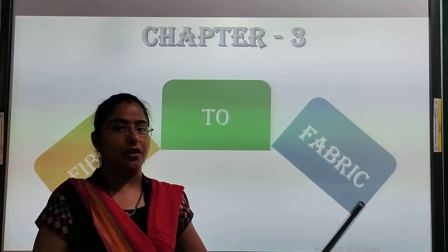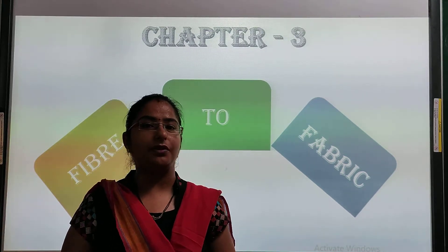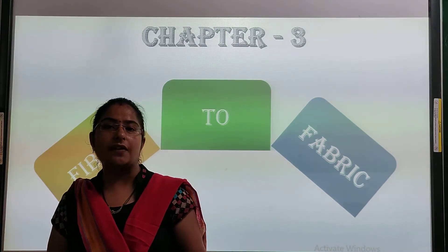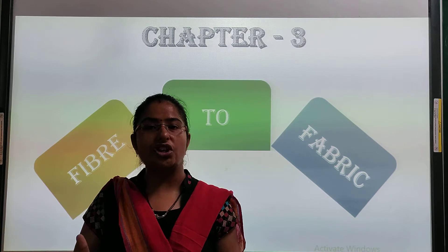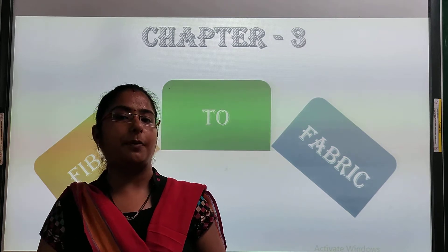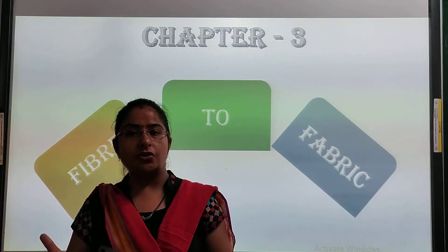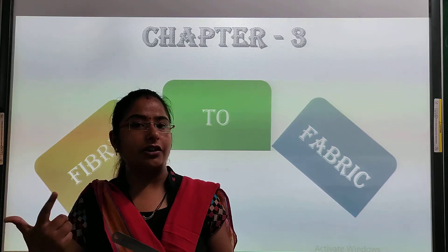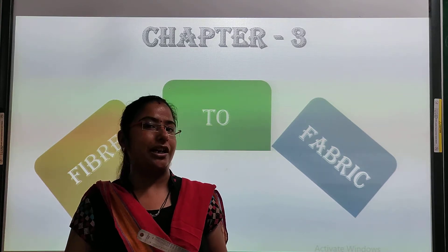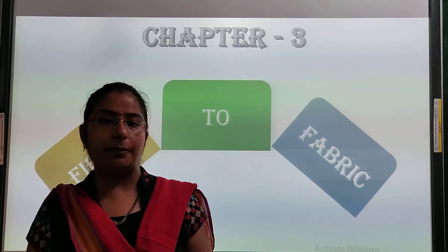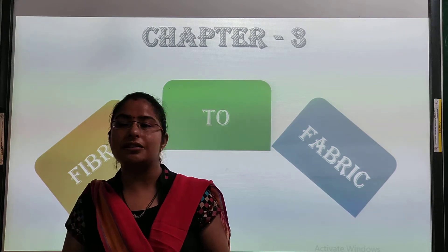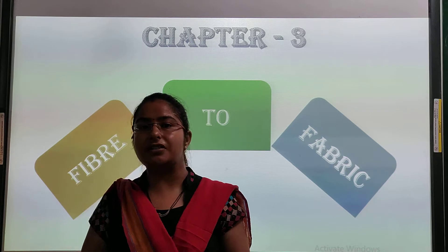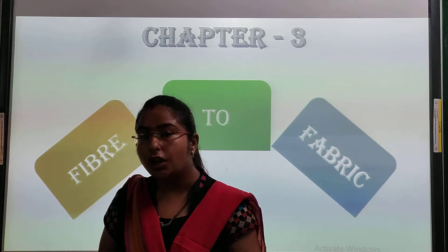The name of our chapter is Fiber to Fabric. As you know, in the previous two chapters we studied about food. Human beings need three most important things: food, clothes, and shelter. So now we will study about clothes. In Fiber to Fabric, we will study about clothes.